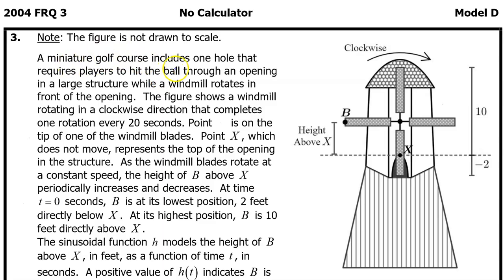A miniature golf course includes one hole that requires players to hit the ball through an opening in a large structure while a windmill rotates in front of the opening. The figure shows a windmill rotating in a clockwise direction that completes one rotation every 20 seconds.